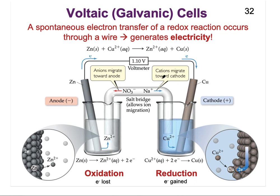We're going to have two half cells. One half cell is where the oxidation takes place, and one is where the reduction takes place. The oxidation occurs at the anode and the reduction occurs at the cathode — an ox, red cat. It doesn't matter whether it's left or right; wherever the oxidation is taking place, you call that the anode side, and wherever the reduction takes place, you call that the cathode side.